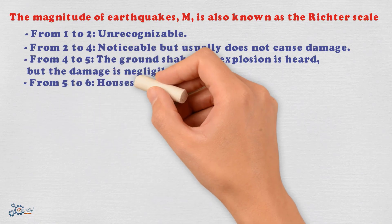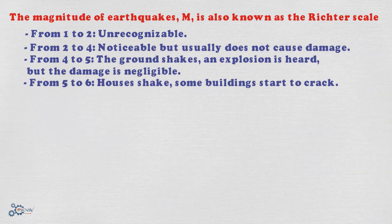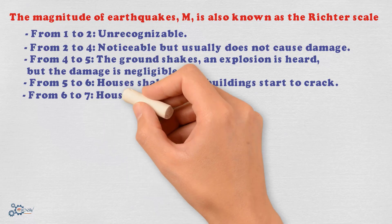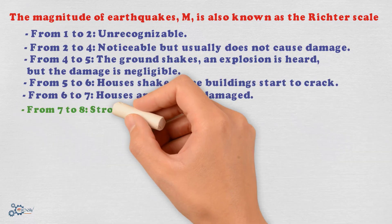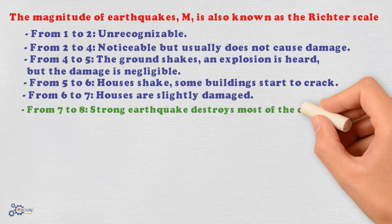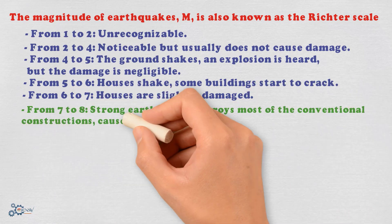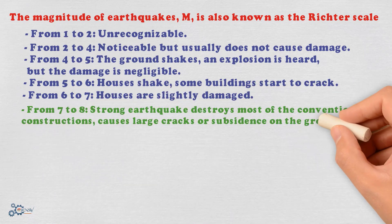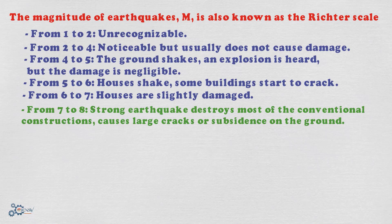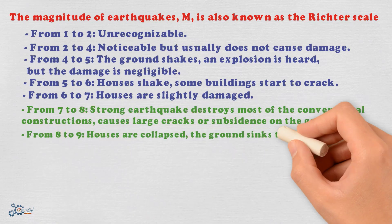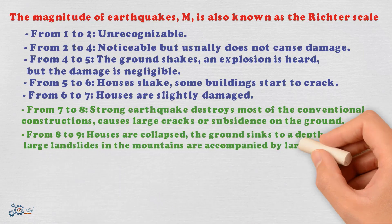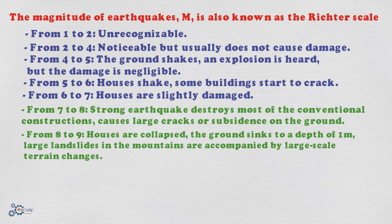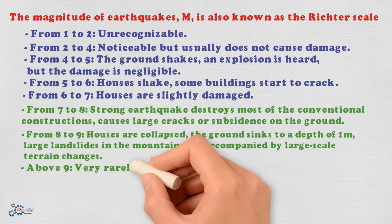From 5 to 6, houses shake and some buildings start to crack. From 6 to 7, houses are slightly damaged. From 7 to 8, a strong earthquake destroys most of the conventional construction and causes large cracks or subsidence on the ground. From 8 to 9, houses are collapsed and the ground sinks to a depth of 1 meter; large landslides in the mountains are accompanied by large-scale terrain changes. Above 9, very rarely occurs.